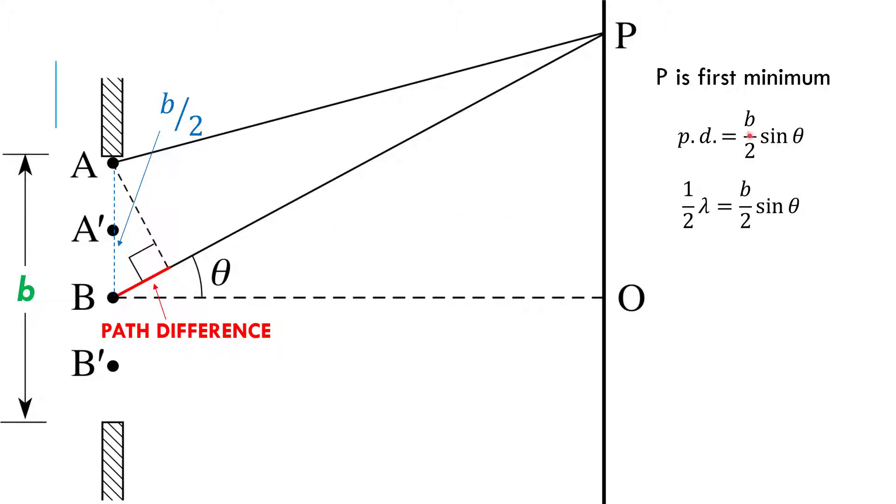and I get b over 2, the hypotenuse times the sine of this angle, which is the angle we say to the first minimum, like this.